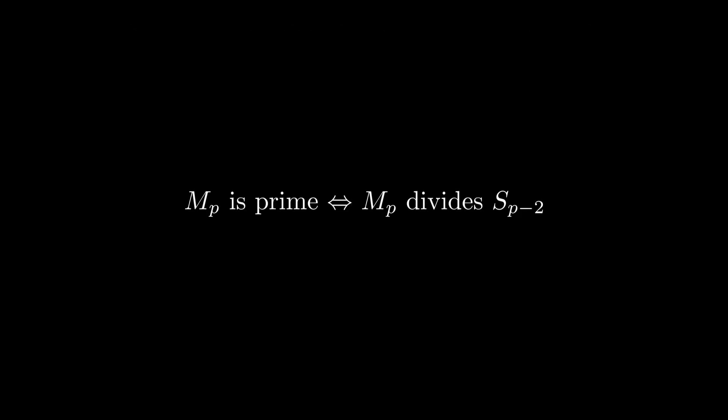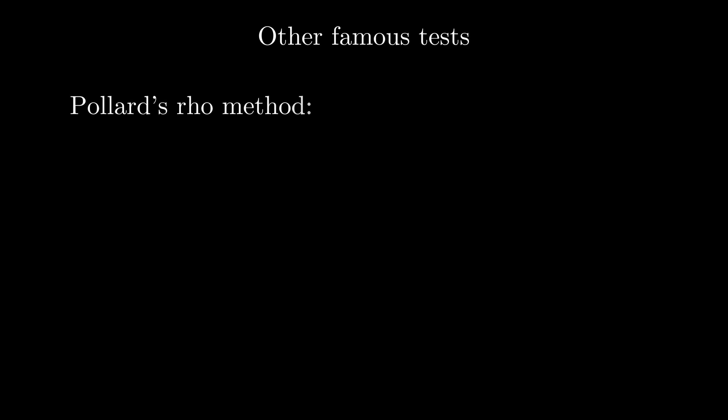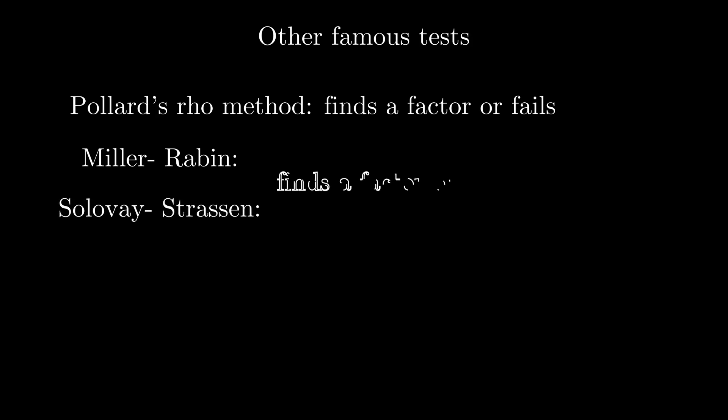This is an if-and-only-if rule, which is so uncommon for primality tests. To remember a few, think about Pollard's rho method. It either gives you a factor or fails. Same with Miller-Rabin or Solovay-Strassen. They either find a factor or tell you that your number is probably prime.